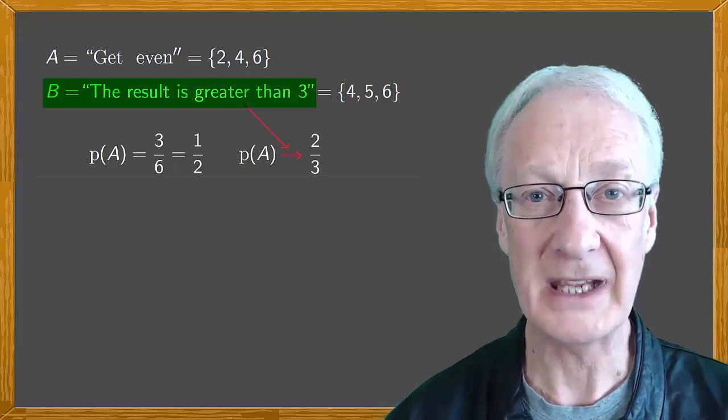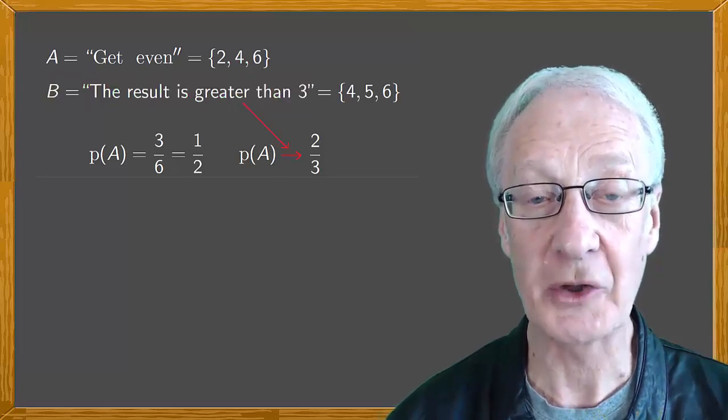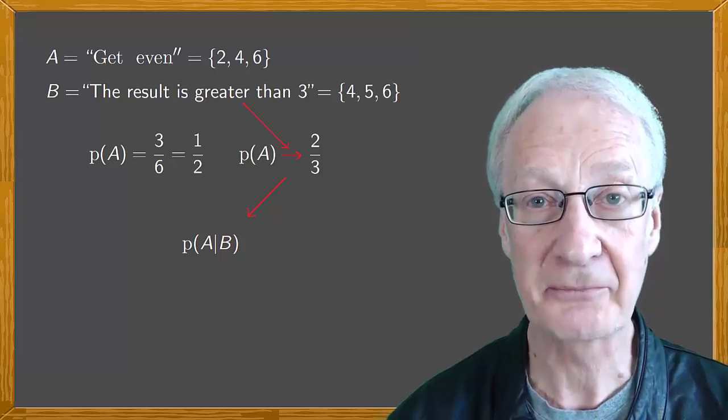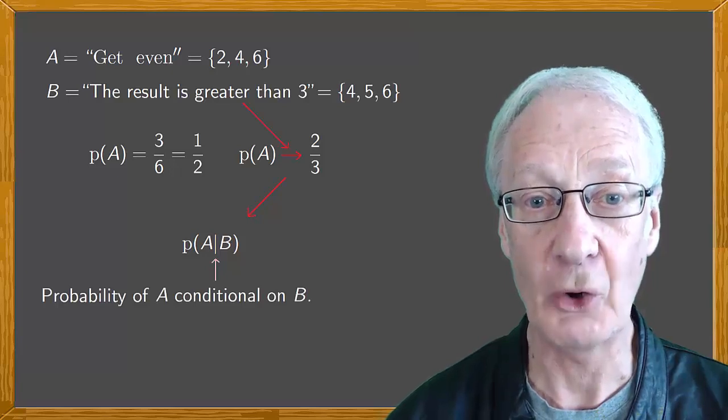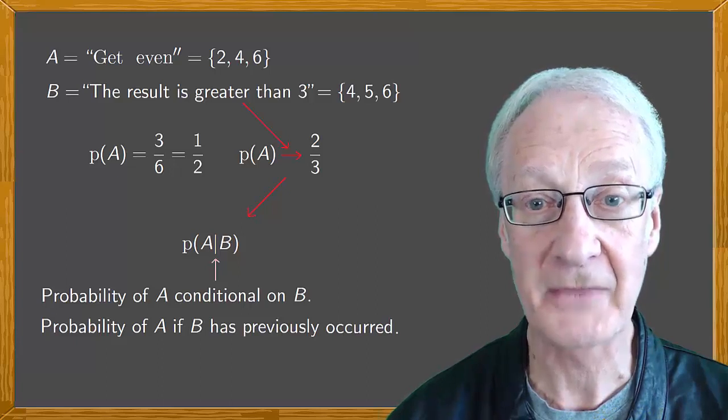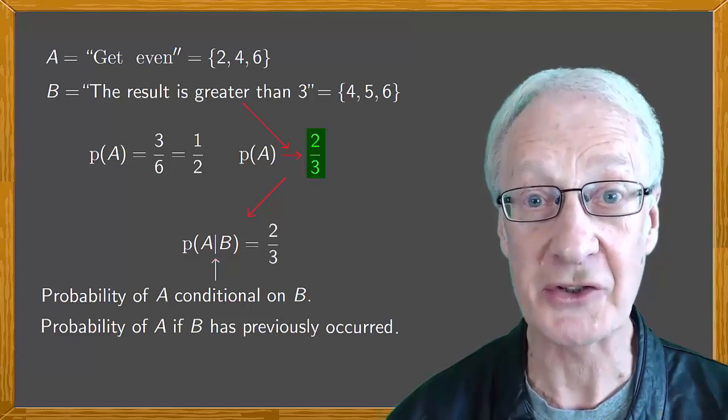If we call B the event that's occurred, this new probability is called the probability of A conditional on B. The vertical line is read conditional on, or the probability of A if B has previously occurred. In the case we've just seen, this probability is 2 thirds.